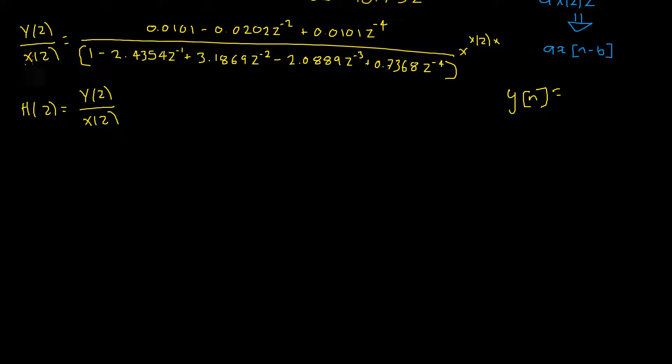On our left hand side the X of Z will cancel and we'll be left with Y of Z times this denominator here that will give us Y of Z times by 1 minus 2.4354 Y of Z multiplied by Z to the power of negative 1 and we might just skip ahead here.